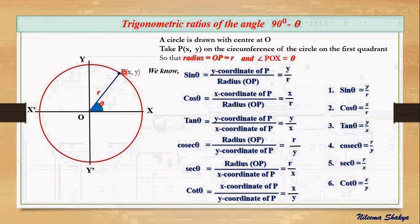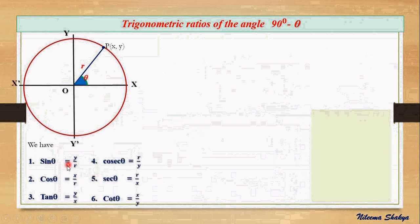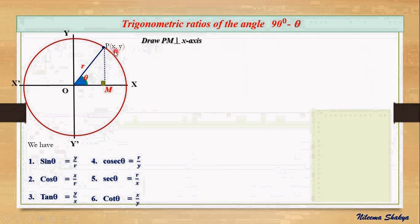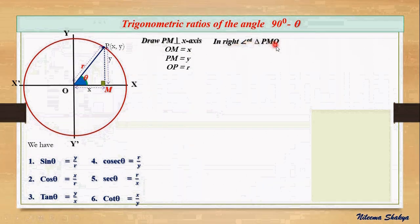Now to work further, let's do some construction on a new page. Here we have the figure from the previous page. Let's draw PM perpendicular to the x-axis. With the help of the coordinates of P (x, y), we have OM = x, PM = y, and OP = r. In this right-angle triangle PMO we have labeled all three sides.